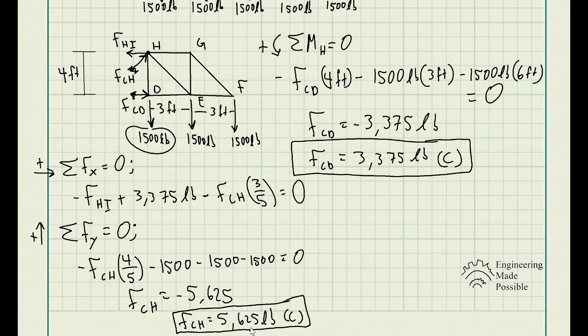And since now we have F_CH, we can actually solve for the member HI, which basically we just plug in and solve accordingly. We get the force of HI is equal to 6,750 pounds. And since it's positive, then our assumption of it being in tension is correct.